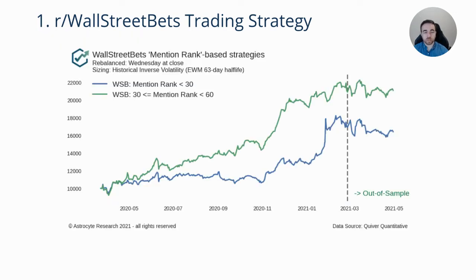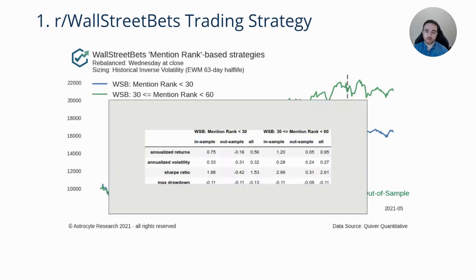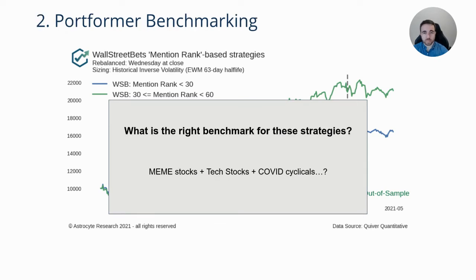So we have two strategies. We look at the top 29 and then the next 30. The blue line here shows the trading strategy of the most popular names, and you can see it goes up and to the right — it has that big pop around the GameStop era — then it's kind of sideways since. The green line has a more consistent return profile. One of the questions we have is: what is the benchmark for each of these? Is it the same? Is it SPY? What type of strategy are these — the most popular and then the next cohort?